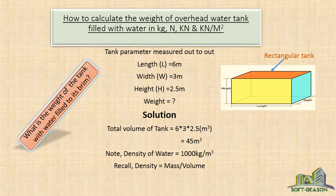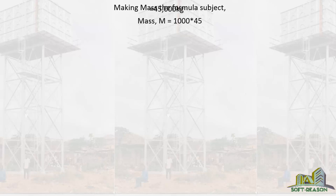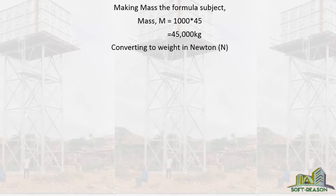Recall that density equals mass over volume. So 1000 (the density of water) equals mass divided by 45 cubic meters (the volume). Making mass the subject of the formula: mass M equals 1000 times 45, which gives 45,000 kilograms.